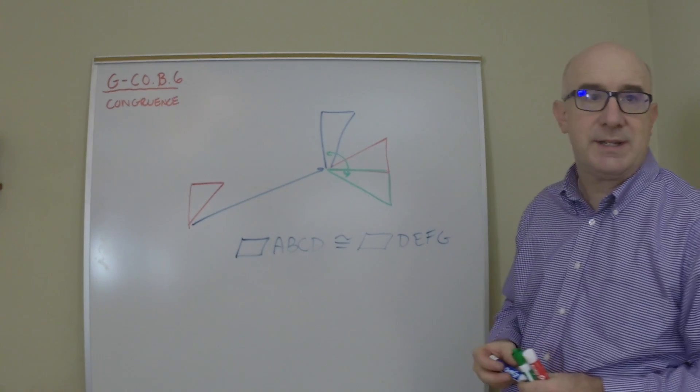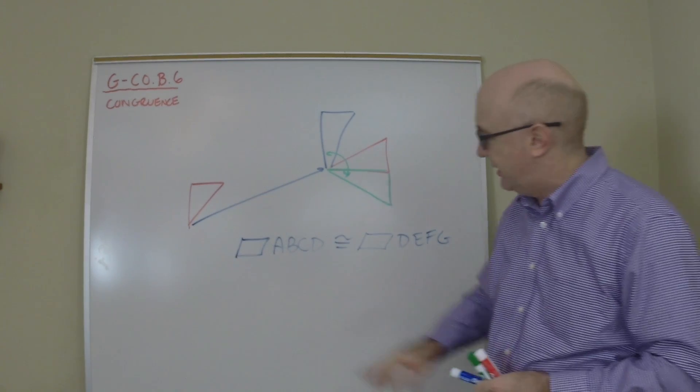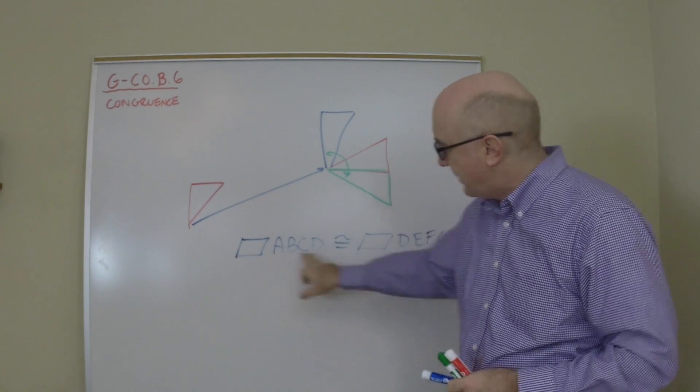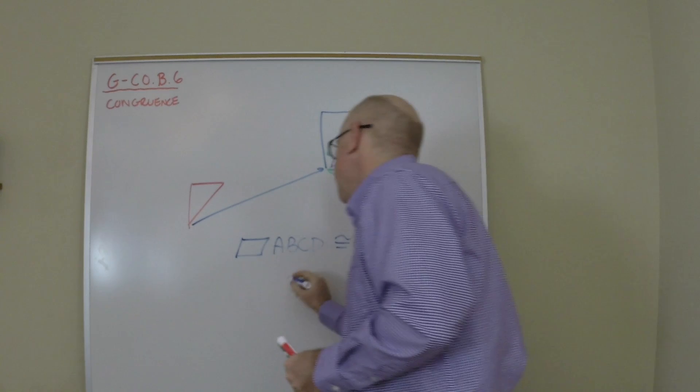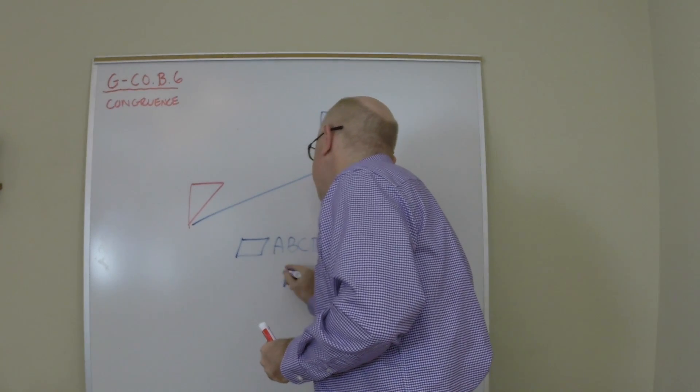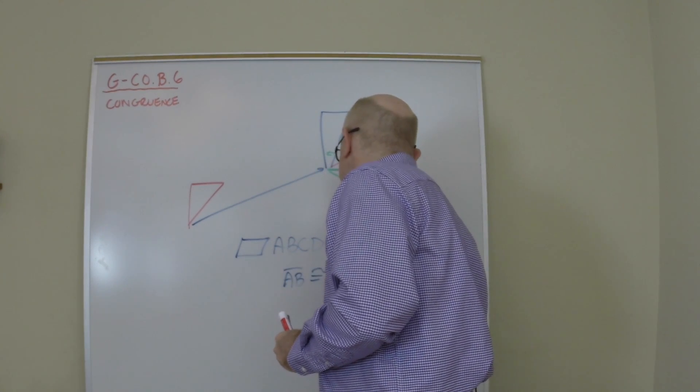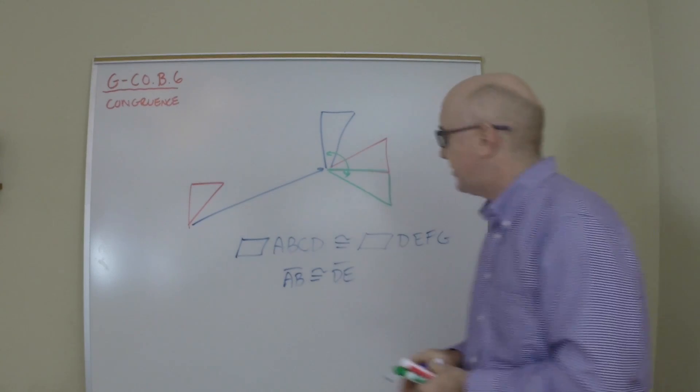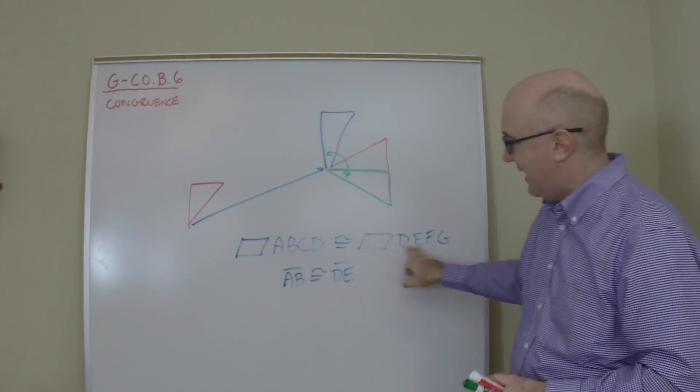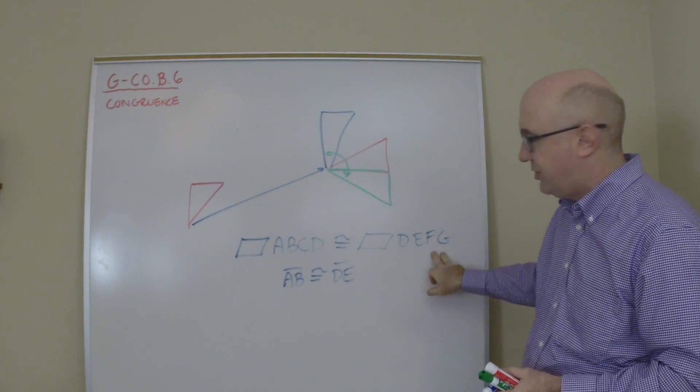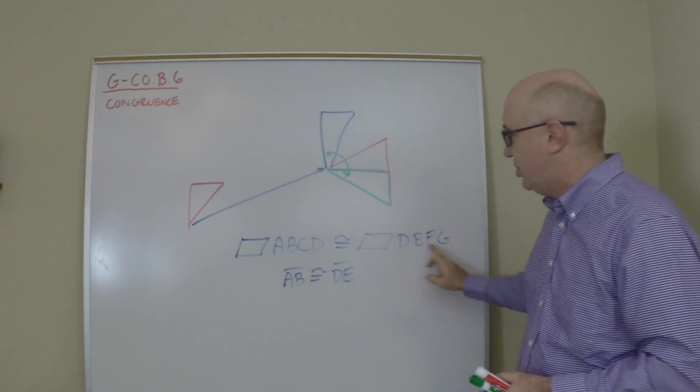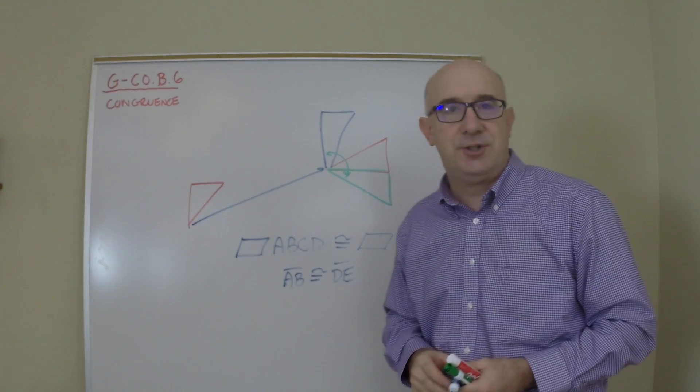First of all, it's stating what segments actually are congruent. So AB is congruent to DE. We know that by how it's written. AB is congruent to DE and so on. BC to EF, CD to FG, DA to GD. All of those things are true.